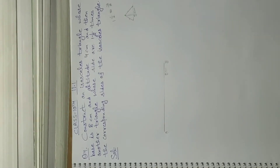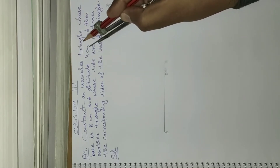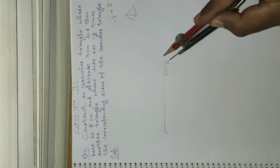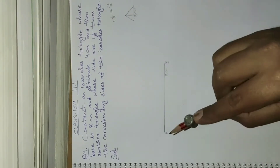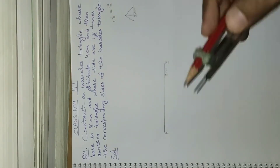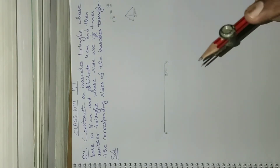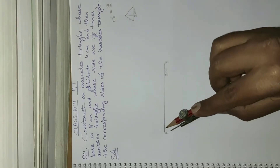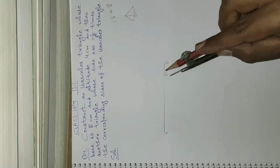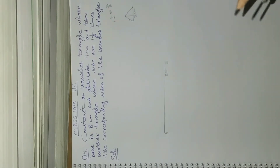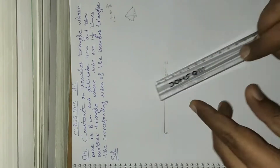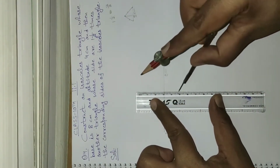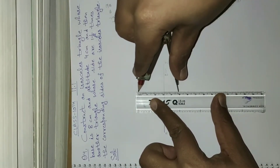The next step is to make the altitude of 4 centimeters on baseline AB. First we shall take the perpendicular bisector of line AB. To do this, we have to open our compass more than half of AB, which is 8 centimeters, so more than 4 centimeters. I'm going to open the compass to 5 centimeters — a whole number. Using the scale, measure 5 centimeters.